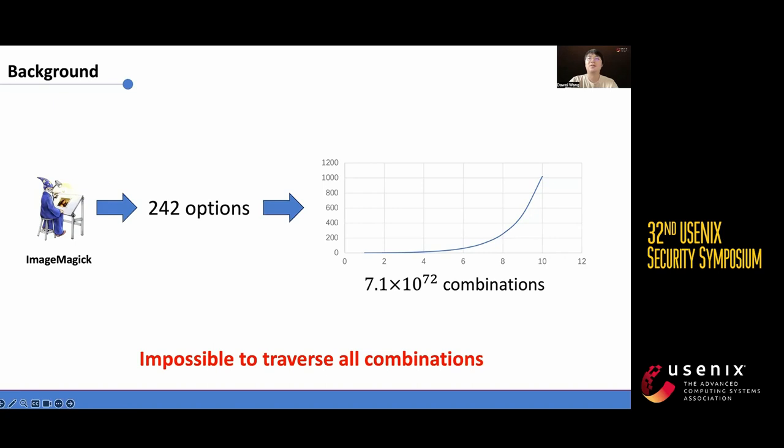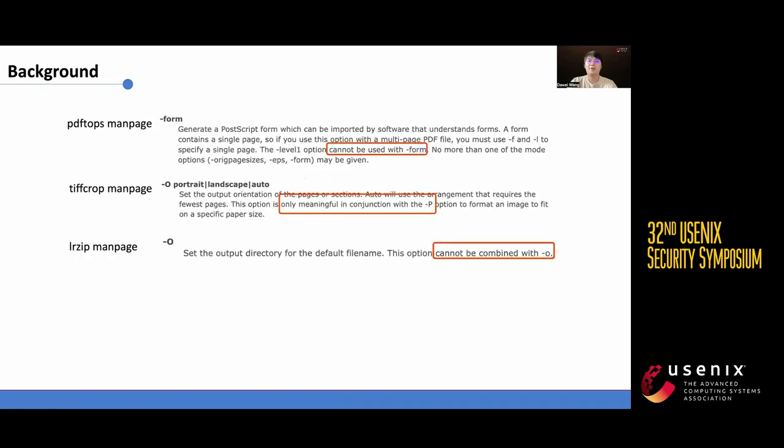significantly increasing the number of targets that need to be tested. As a result, it becomes practically impossible to explore the total number of combinations, such as the staggering 7.1 times 10 to 72 for ImageMagick. According to our findings, certain options exhibit constrained relationships, such as some options that cannot be used together, or others that must be used in combination.